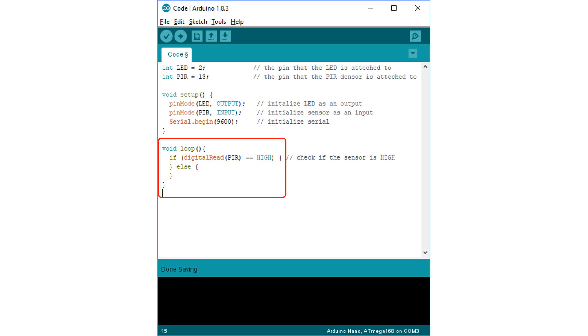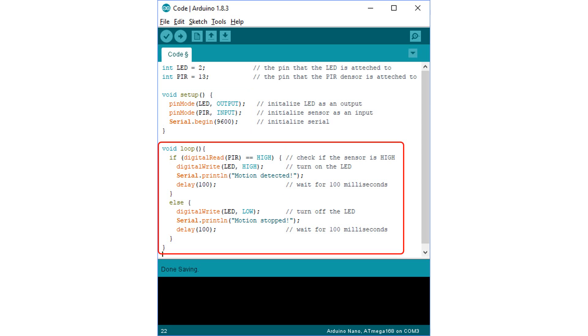Next, we need to read the value of the PIR pin and see if it is high. If the value is high, then turn on the LED, otherwise turn it off.